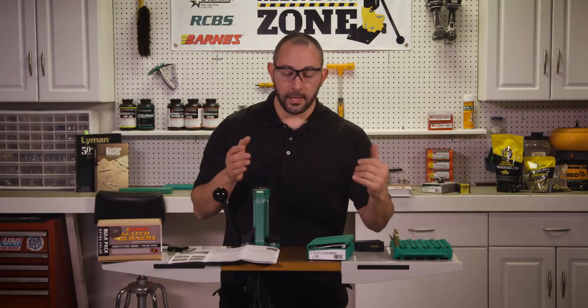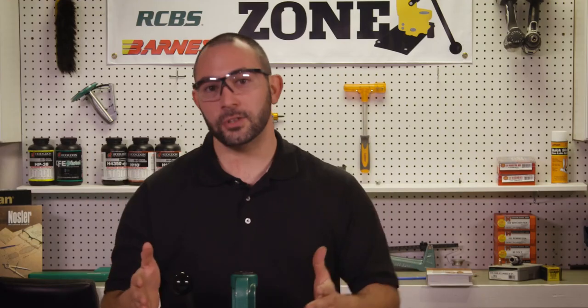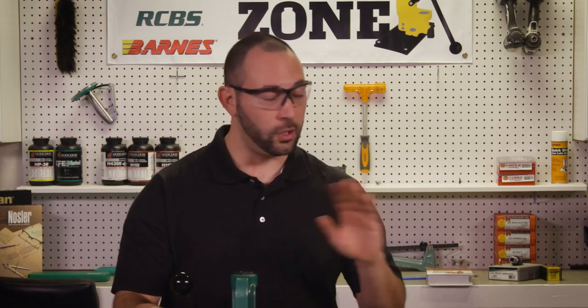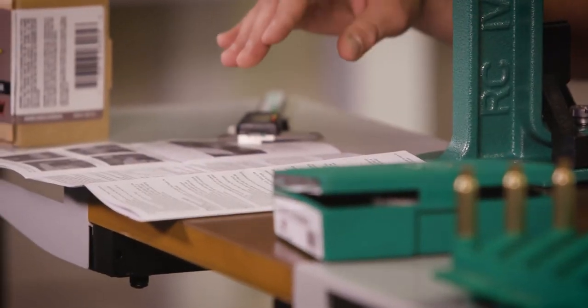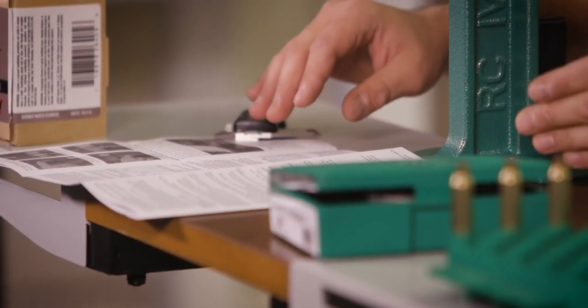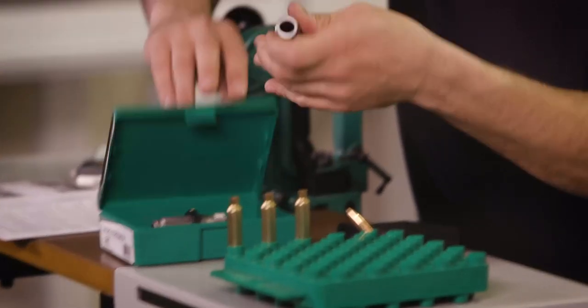Now that we've found our starting points, we're going to make a dummy round to make sure that the round that we plan on loading actually will fit in our magazine and cycle through the action. So let's set up our seating die. I can't stress this enough. Instructions are included for a reason. Read them. Dies from different manufacturers all set up differently, and depending on if you want that die to crimp or not is also going to change the setup process.